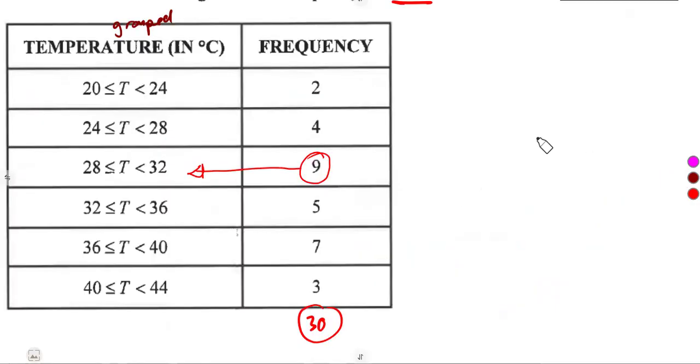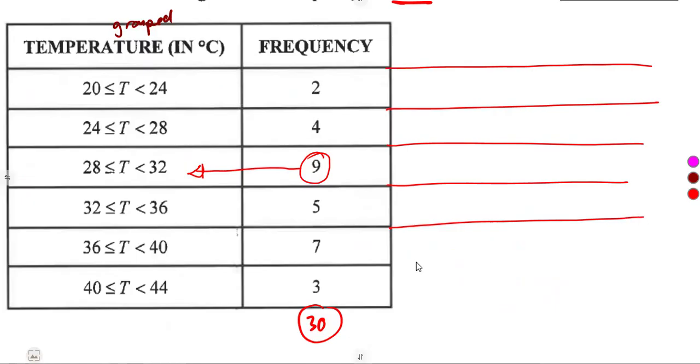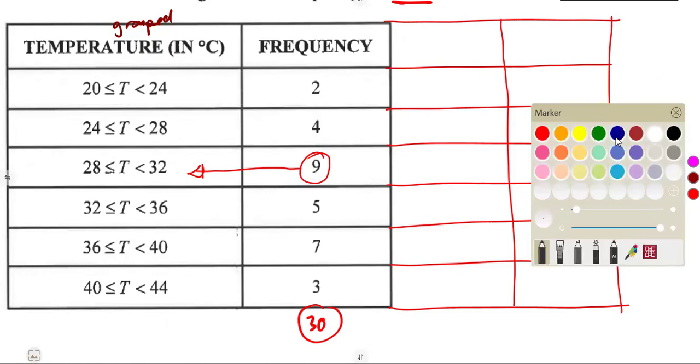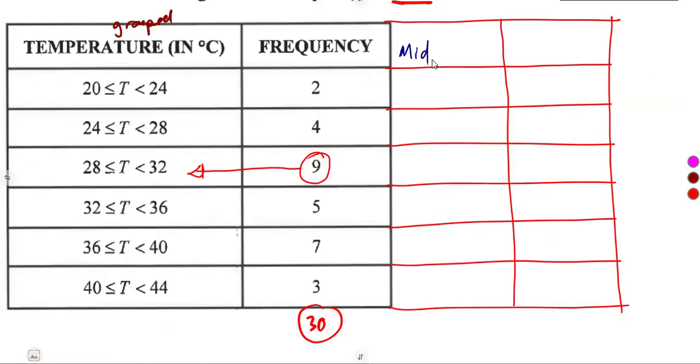We must have the midpoints first in order for us to determine the product of the two. So we must make adjustments from the table that we are given. Let us just make some few adjustments. Just have two columns. In this case, that is the first column for the midpoints. And the other column is going to be for the product of the frequency to their corresponding mean values for each interval. Here, we are going to have X, which is the midpoints, then here we are going to have the frequency, which is F times X.